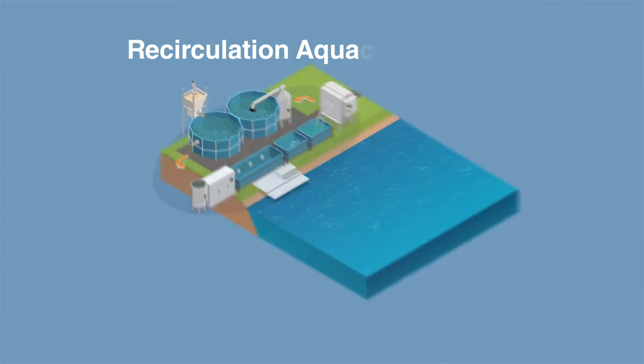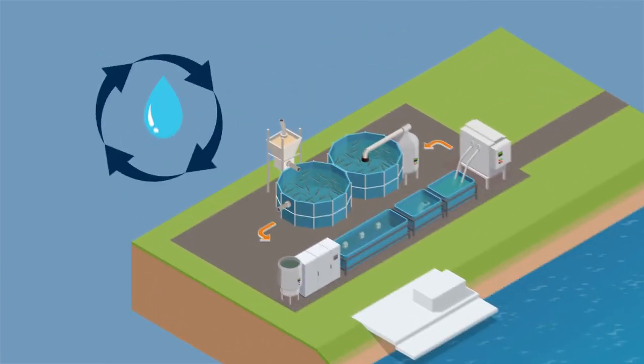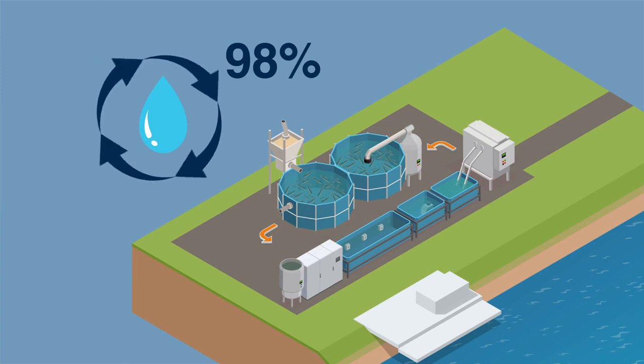RAS systems are built on shore, not in the ocean, lake, or rivers. The water is recovered up to 98% to reduce total water consumption.